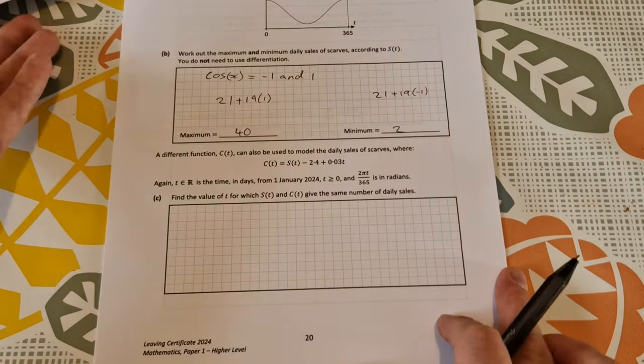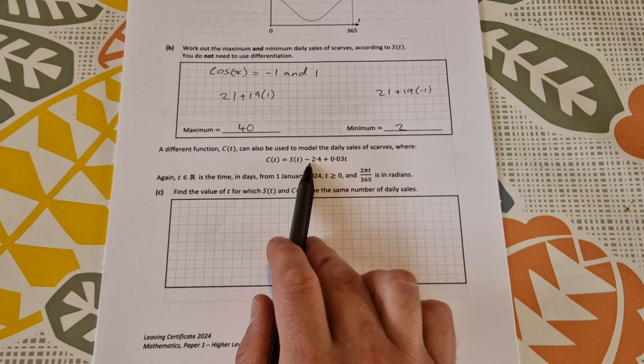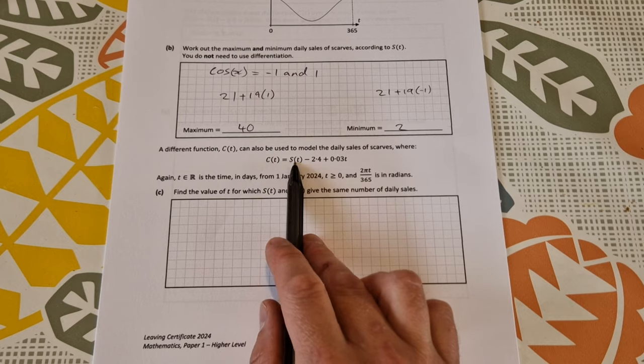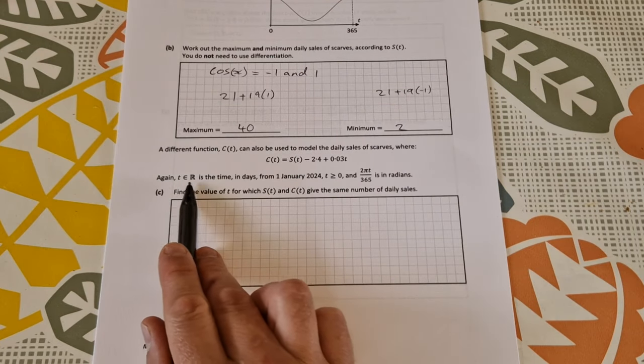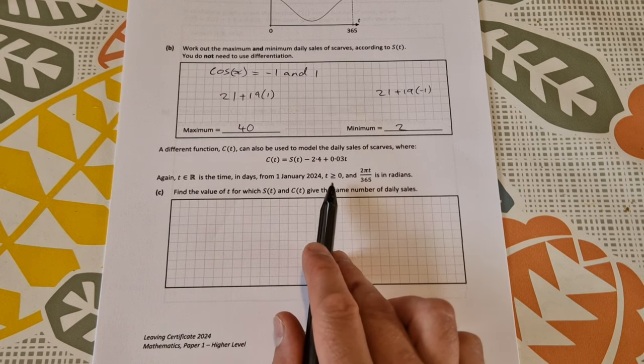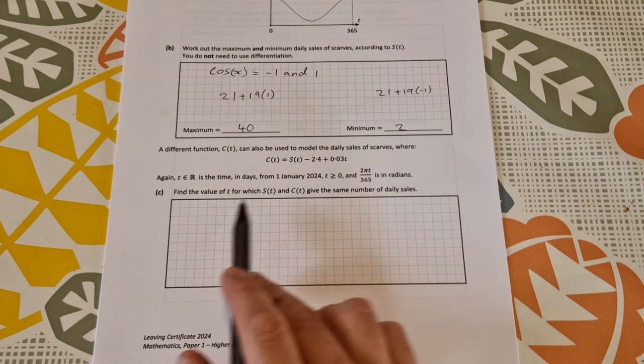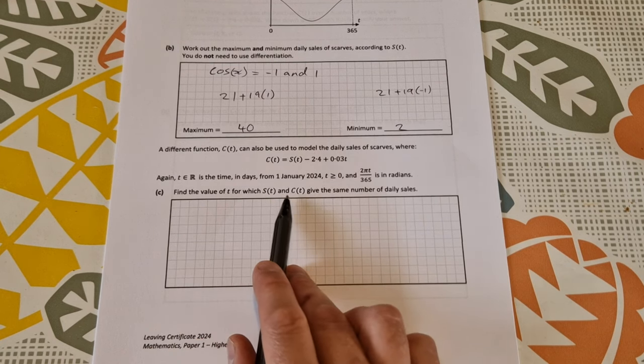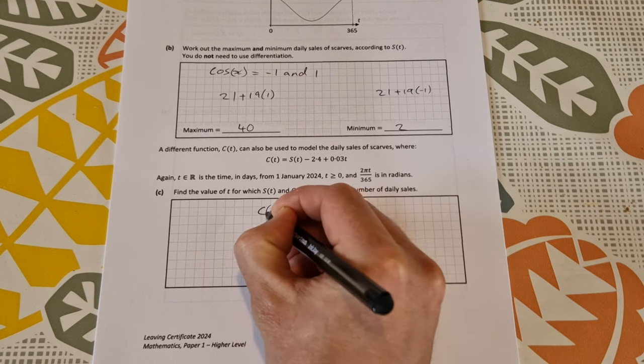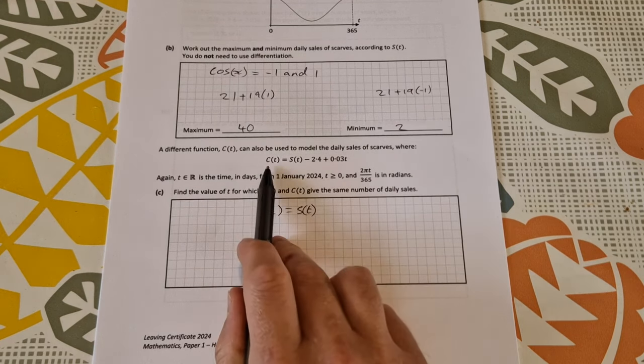A different function c(t) can also be used to model the daily sales of scarves, where c(t) equals s(t) minus 2.4 plus 0.03t, s(t) being the function from earlier. Again, t is an element of R, it's the time in days from the first of January, t is greater than zero, and 2πt over 365 is in radians. Find the value of t for which s(t) and c(t) give the same number of daily scarves.